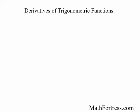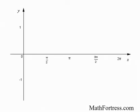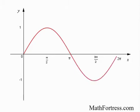Derivatives of trigonometric functions. To determine the derivative of trigonometric functions, I'm going to start out by graphing one full cycle of the sine curve. You should be familiar with this function from your studies of precalculus or math analysis. From 0 to 2 pi, the graph looks like this. It has a maximum of 1 and a minimum of negative 1.